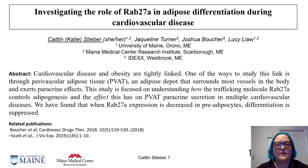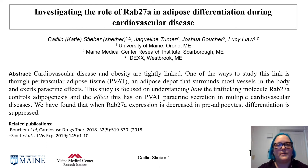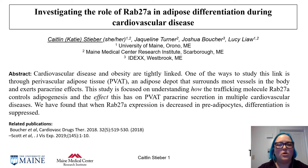PVAT sits on the vessel wall and secretes factors that affect the underlying smooth muscle cells. My goal is to understand how what is secreted changes during disease states, and specifically how the trafficking molecule RAB27A controls adipogenesis of PVAT that then goes on to affect this paracrine secretion.